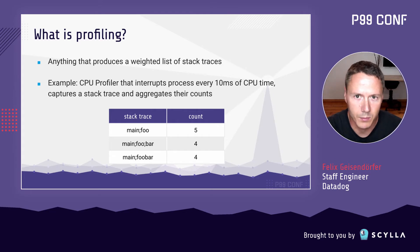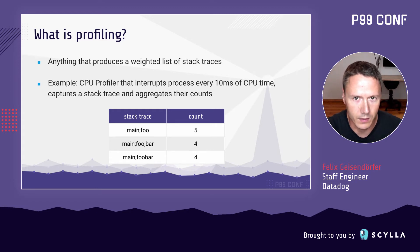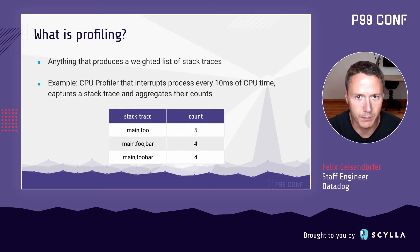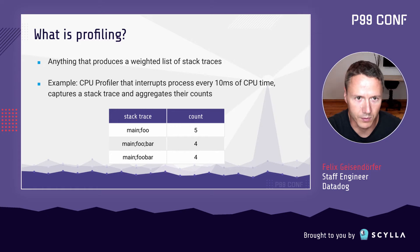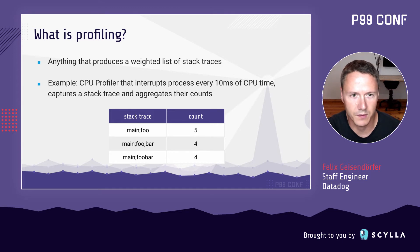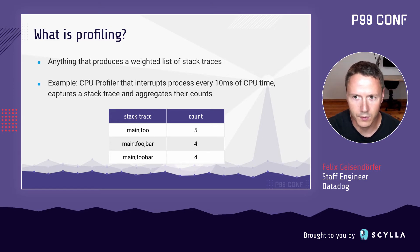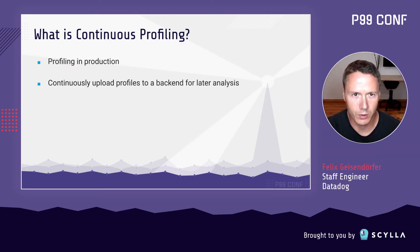To me, profiling is anything that produces a weighted list of stack traces, also known as a profile. The most common way to capture this data are sampling CPU profilers that interrupt the program every 10 milliseconds of CPU time and capture a stack trace. The stack trace becomes the primary key of a table, and a counter gets incremented to track the number of times it has been observed. Each occurrence represents 10 milliseconds of CPU time. Go supports this type of CPU profiling as well as other profilers.